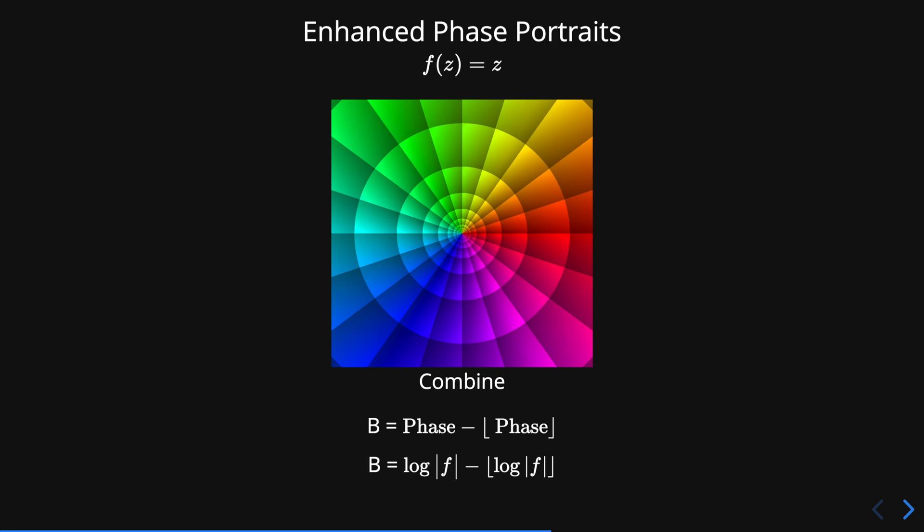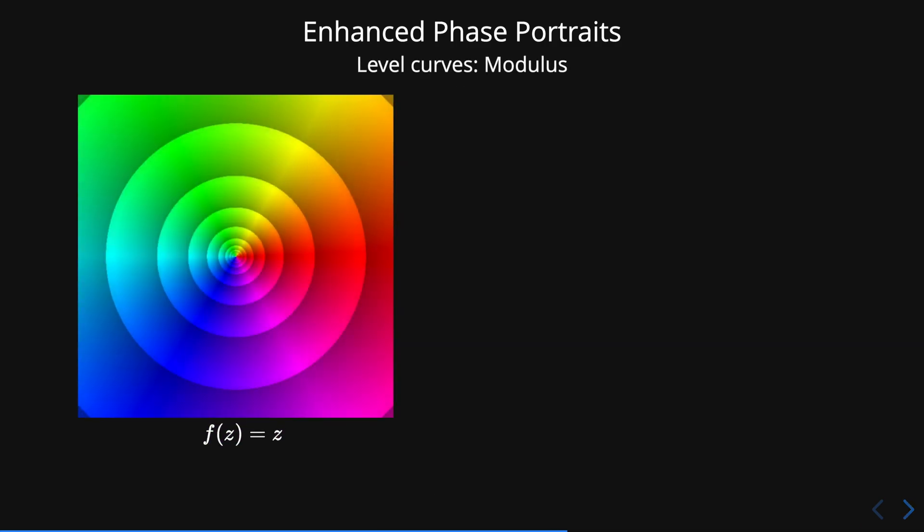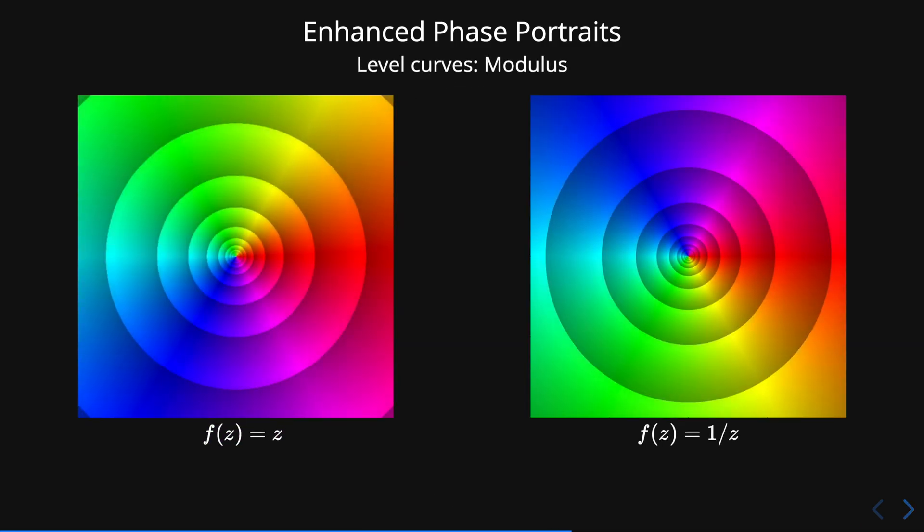With this introduction of the level curves of the modulus, we can easily identify zeros and poles. Notice how the shading changes in the regions between the level curves. For example, when the function has a zero, the shading goes from lighter to darker.